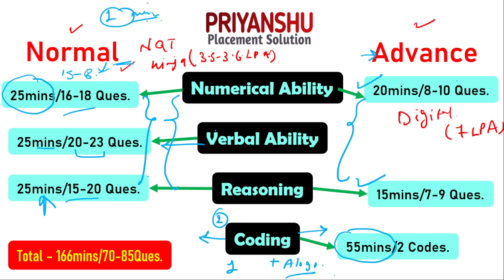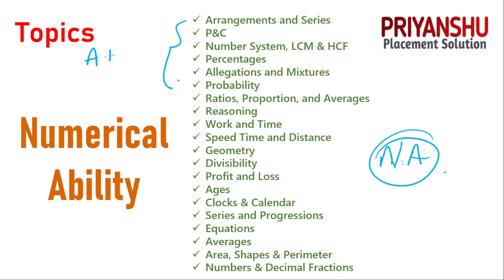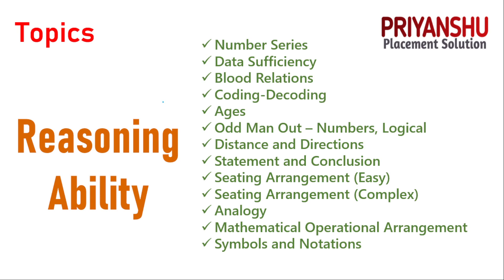This is the updated pattern of TCS NQT for the upcoming slot. The total duration is approximately 160-plus minutes, which we can say is around 2.5 hours. Now let me show you some important topics. For Numerical Ability, these topics are important — they apply to both Advanced and Normal. The question level will increase or decrease, but the topics remain the same.